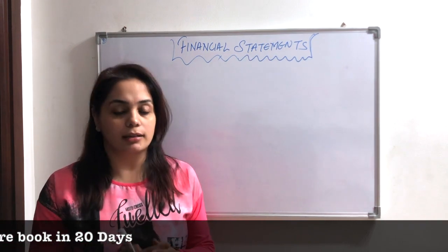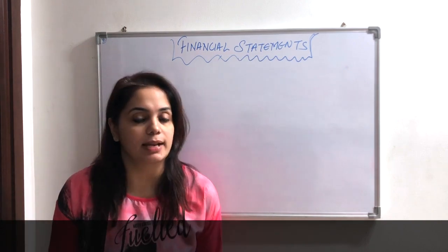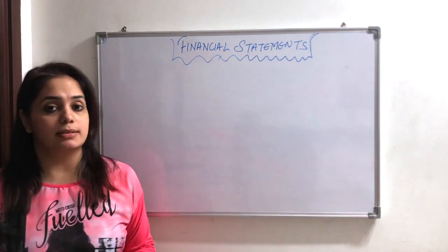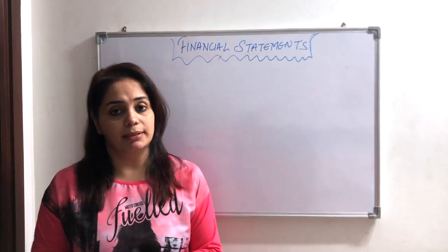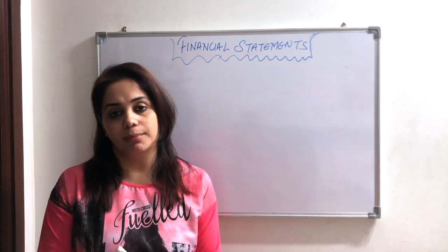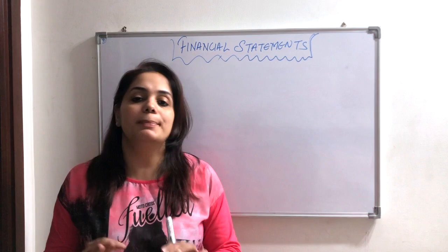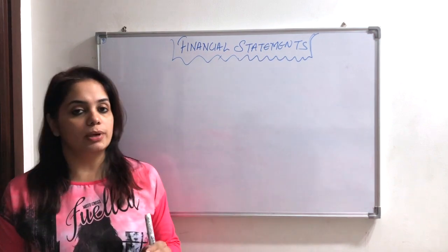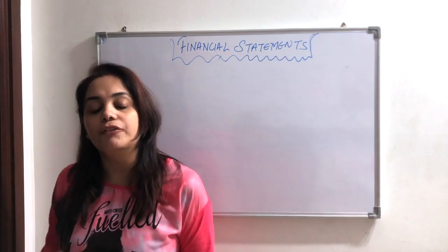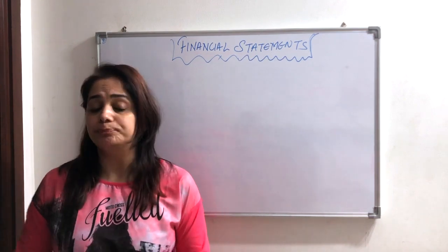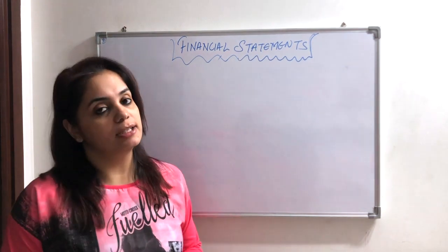I will start with the first topic: financial statements. In this book there is financial statement analysis, financial statements and accounting ratios, and then finally we have cash flow statements. First of all you need to be clear about what things are included in financial statements.